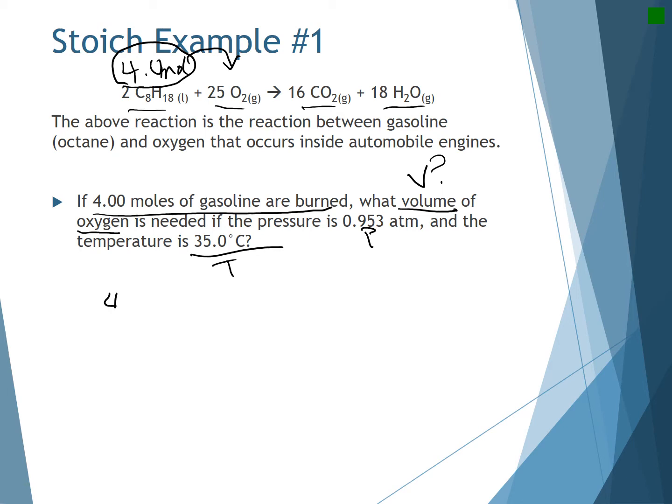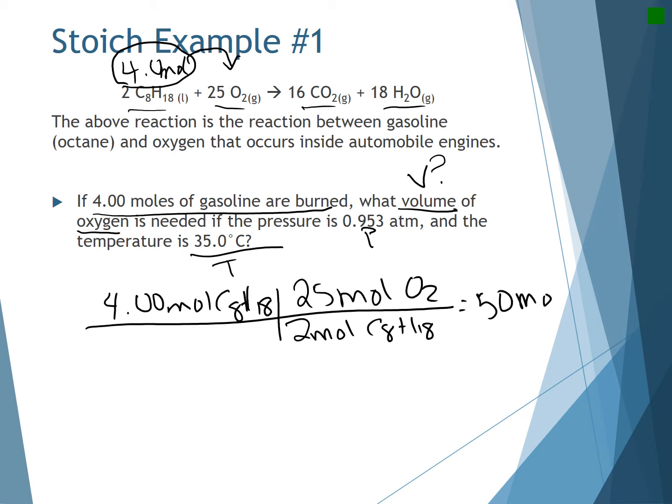So I'm going to start with 4.0 moles of gasoline, C8H18, and I am going to use the molar ratio to get to moles of oxygen. So it would be 2 moles of gasoline for every 25 moles of oxygen. So knowing this, I would need 50 moles of oxygen to completely combust or react with my moles of gasoline.